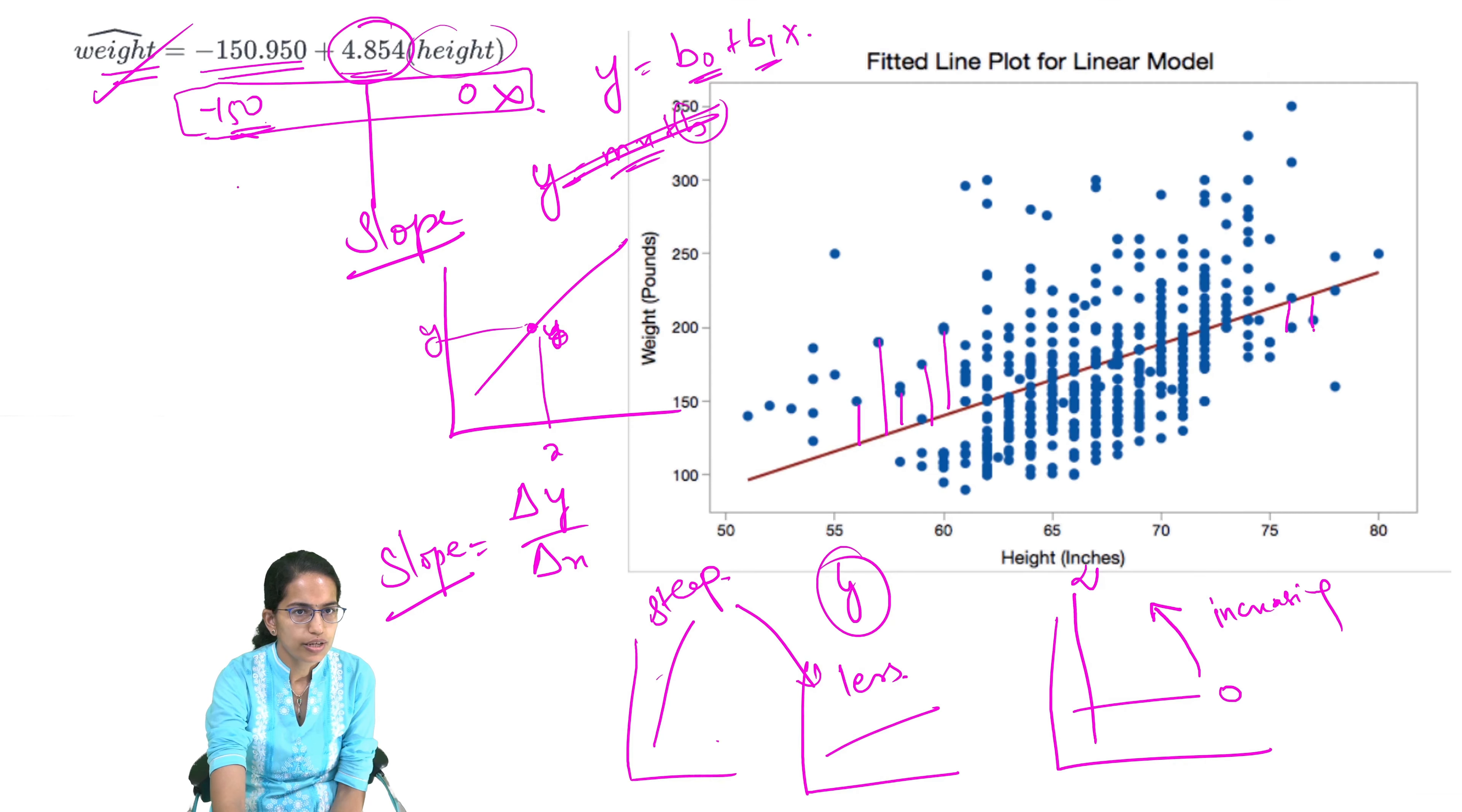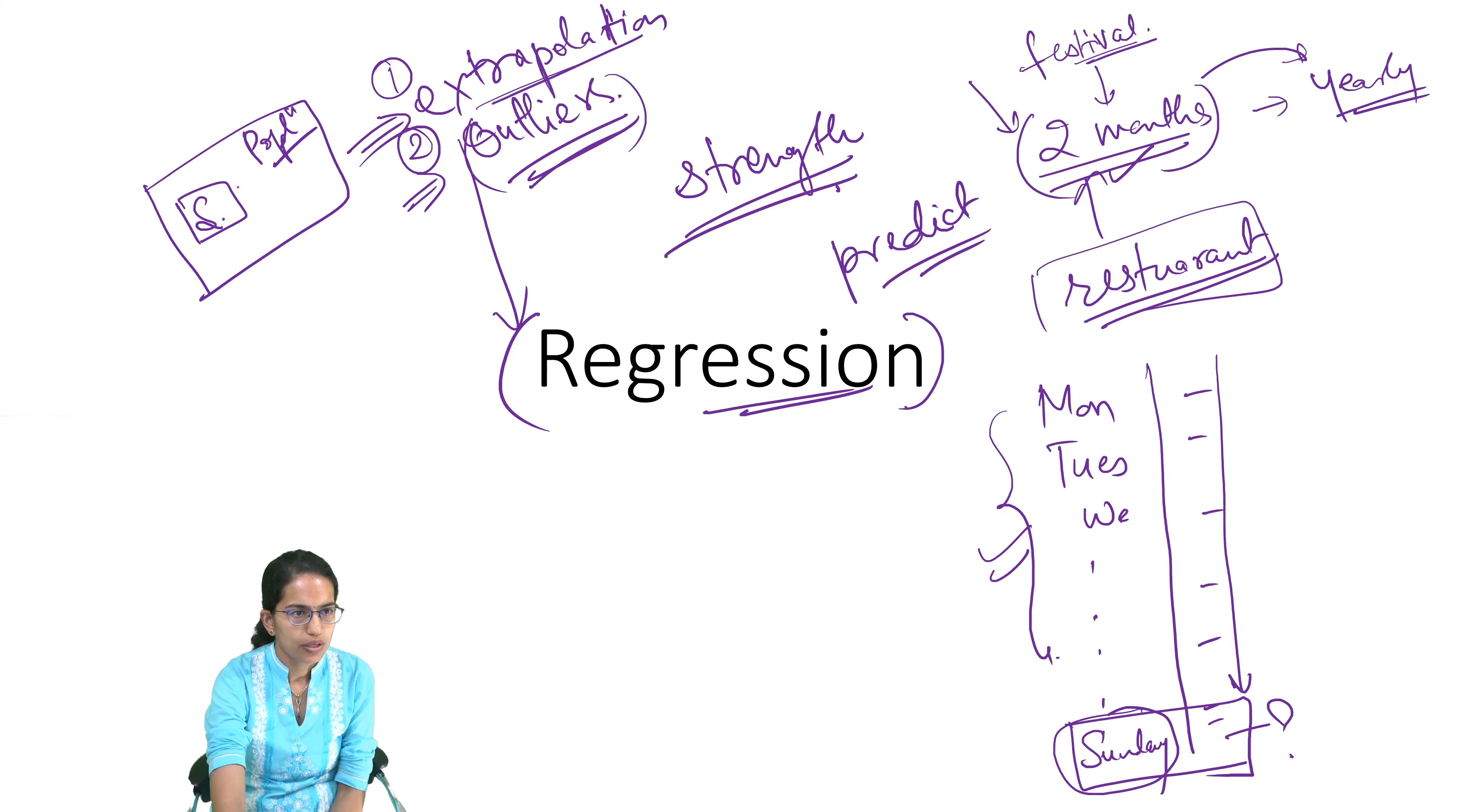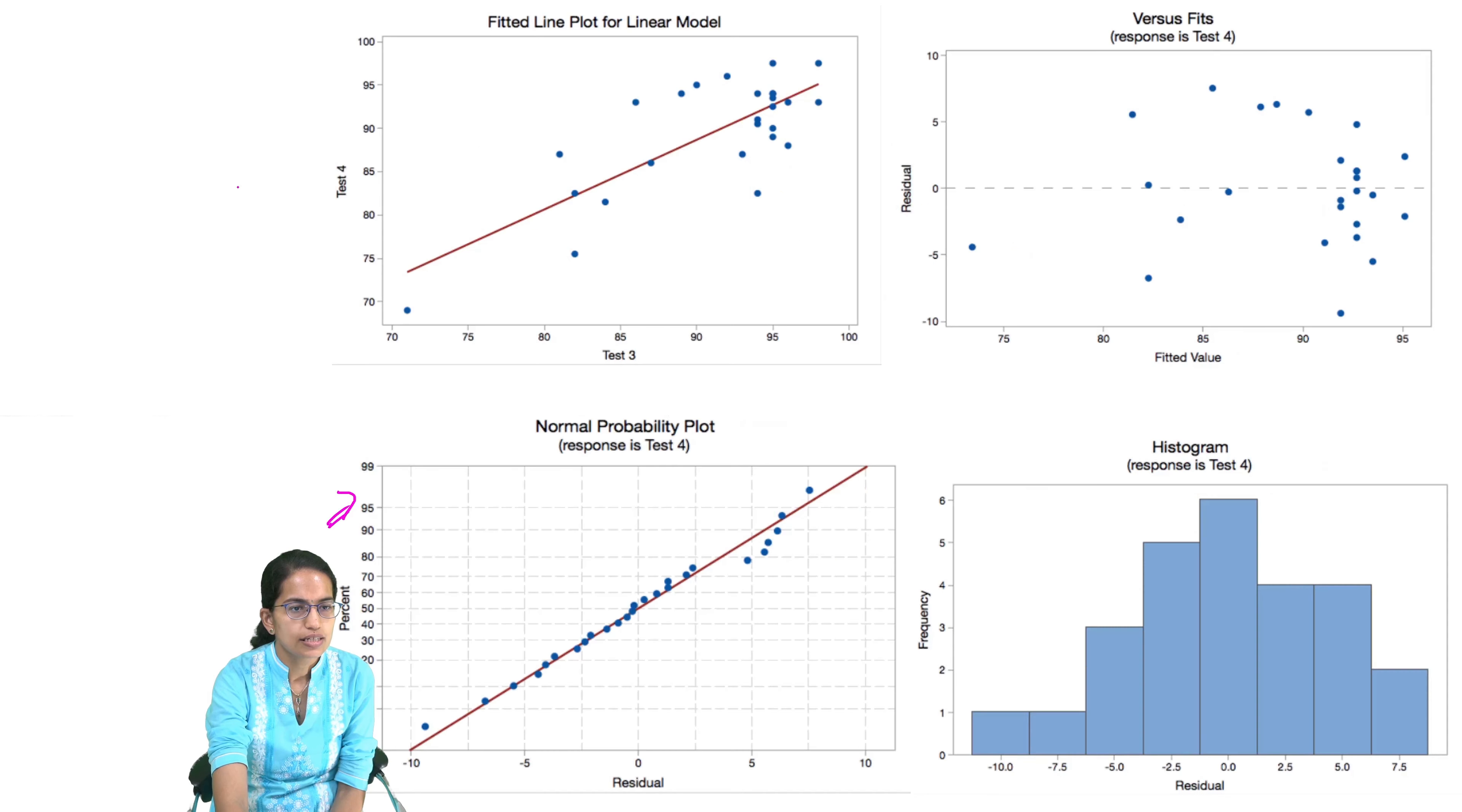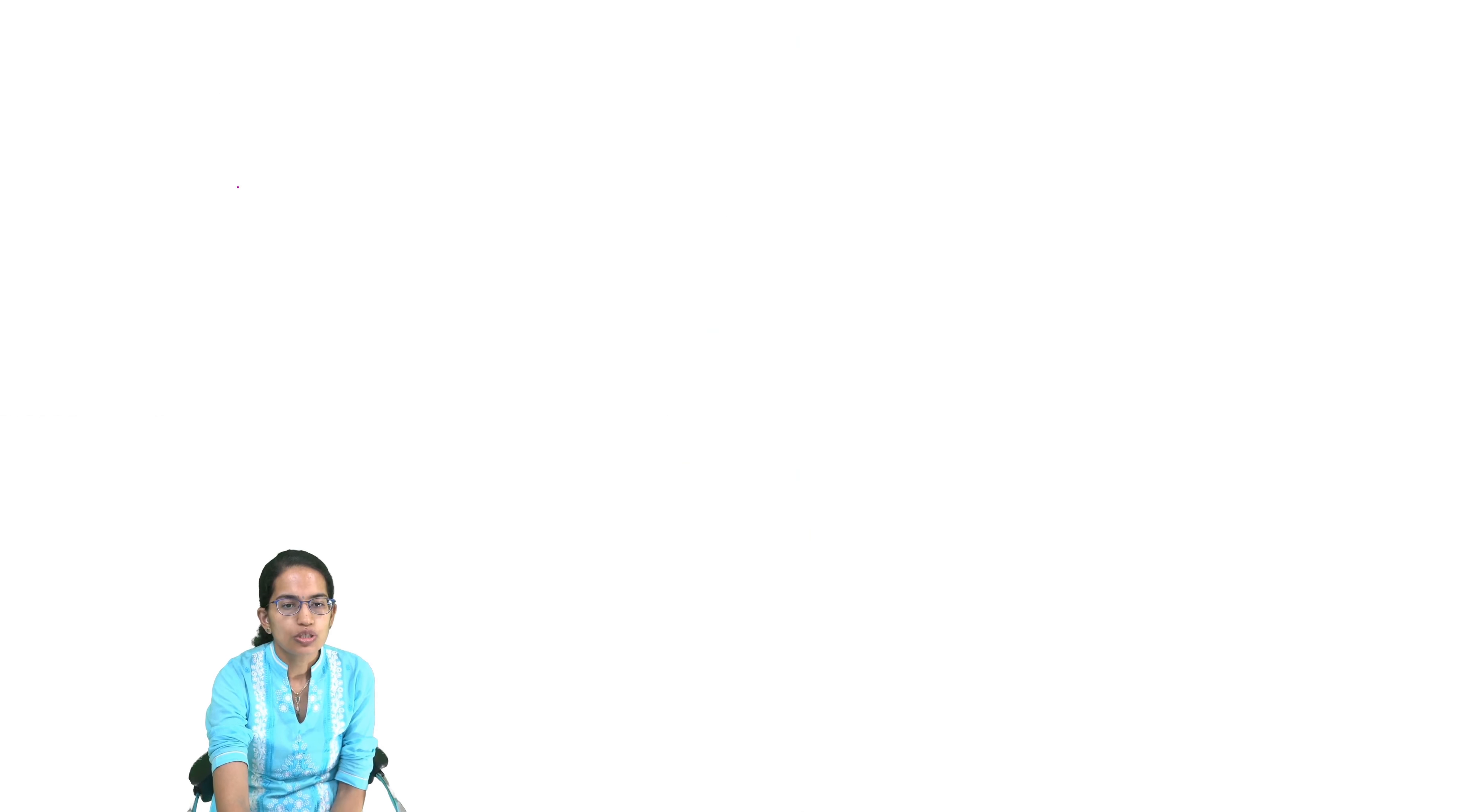Once I have the two slopes - I mentioned that the geometric mean of the two slopes, which is the slope of y on x and x on y, the geometric mean of that would be equal to what?